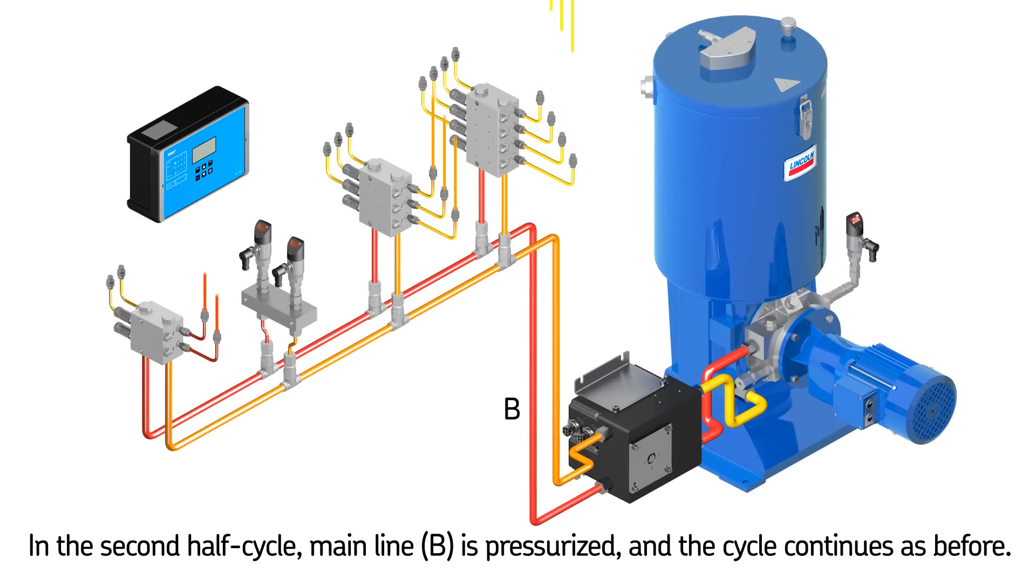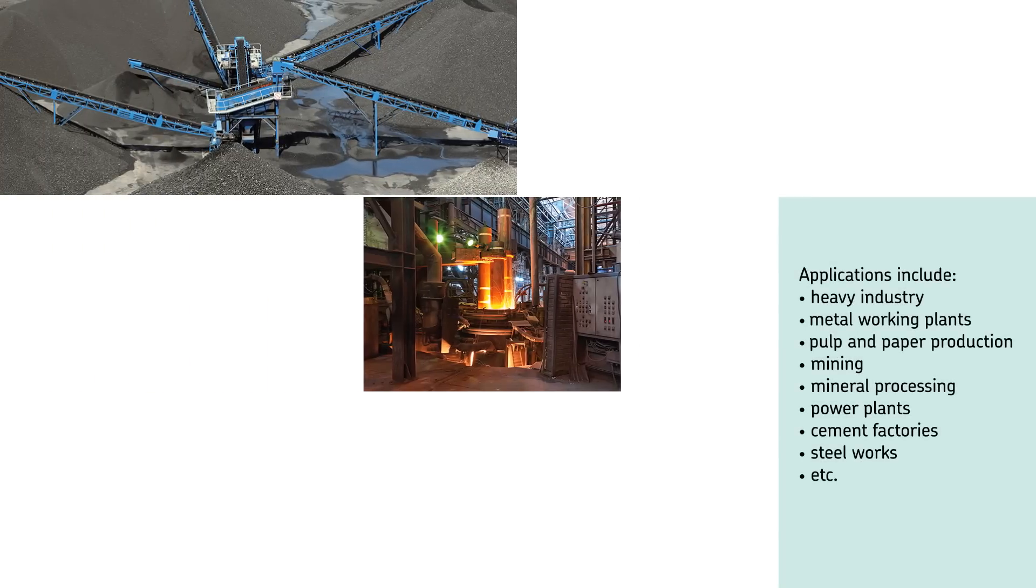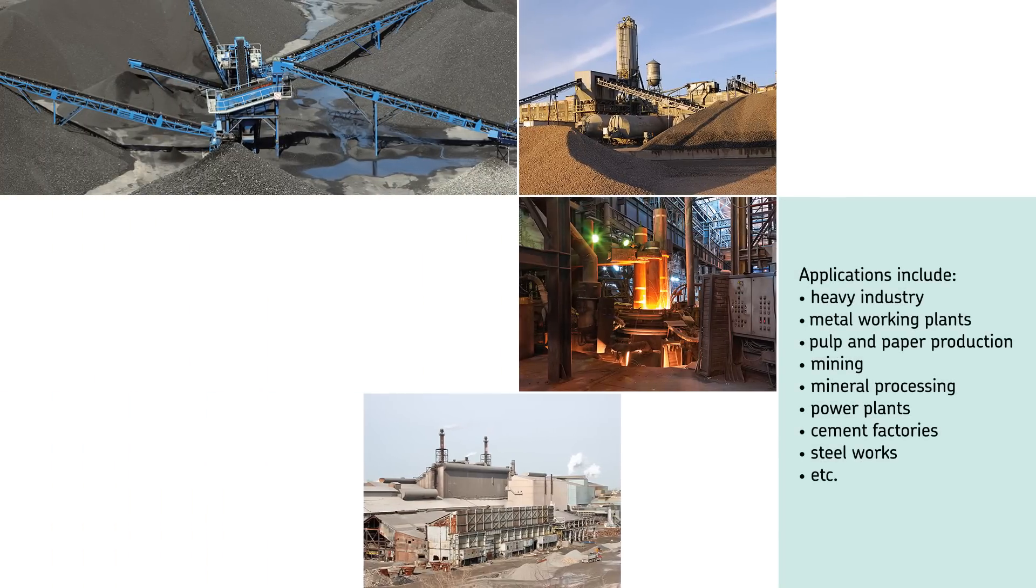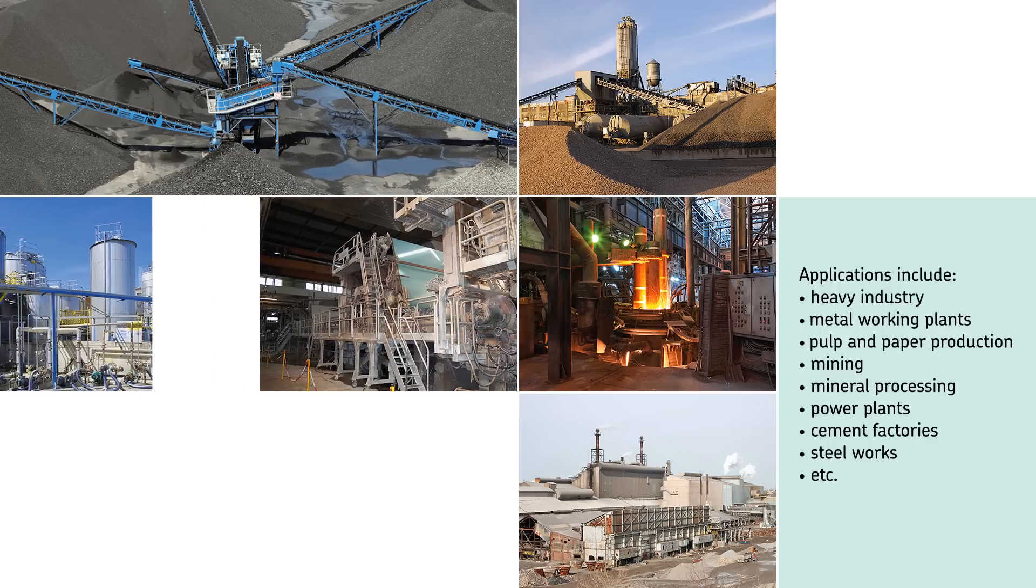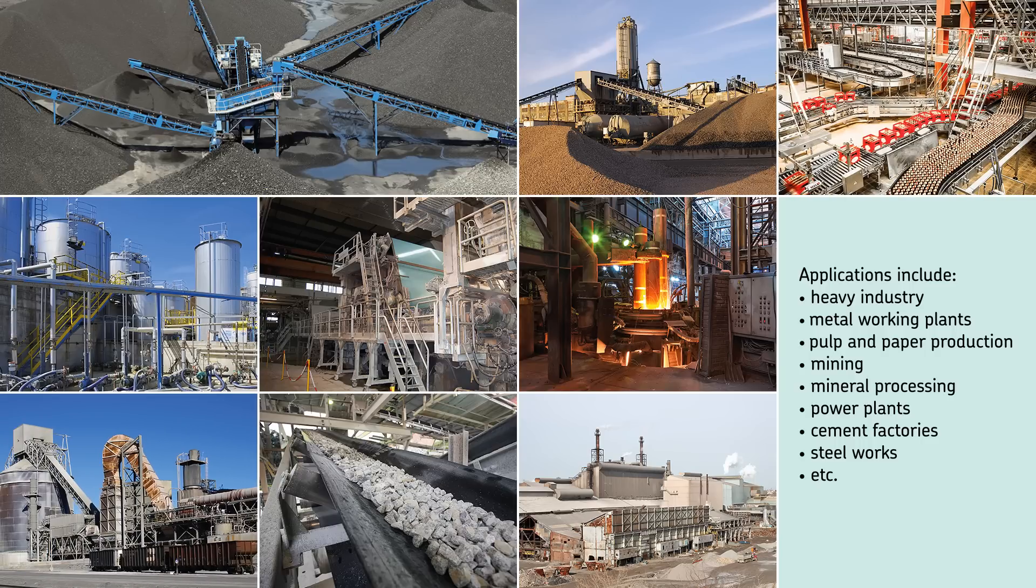and the second half of the system lubrication points gets lubricated. Afterwards, the cycle continues as before. SKF dual-line lubrication systems are suitable for a variety of applications including heavy industry, metal working plants, pulp and paper production, mining, mineral processing, power plants, cement factories, steelworks, and more.